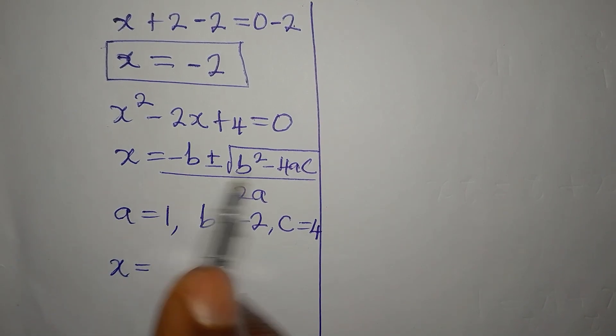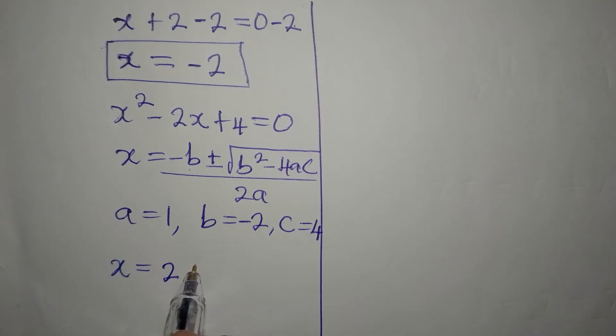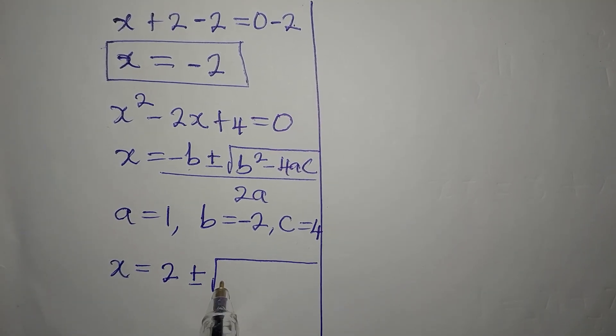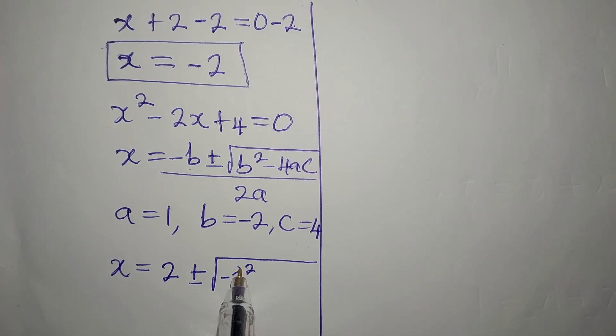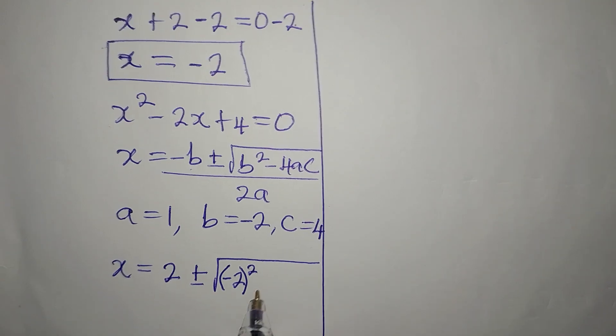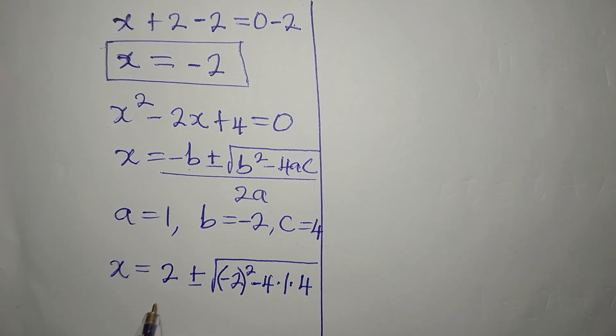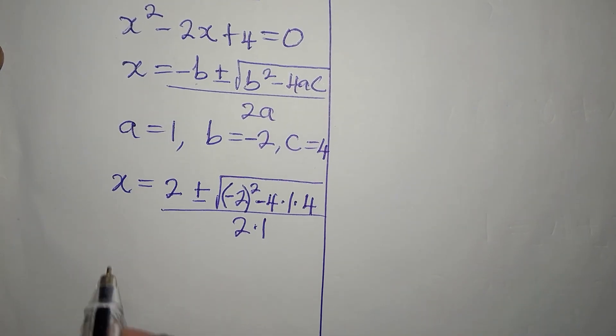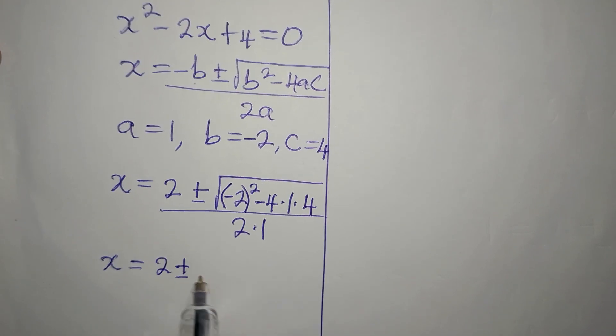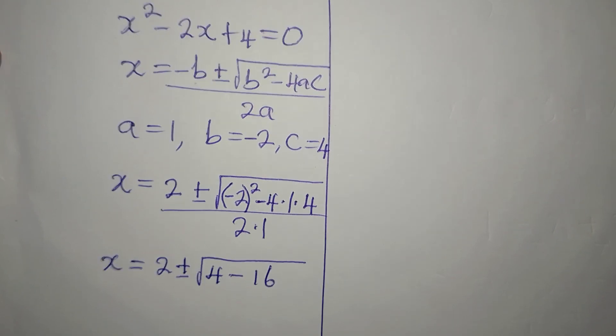x will now be, this minus 2 will be, minus b will become 2. Because negative, negative will turn to positive. Then plus or minus square root of negative 2 squared. If I write like this, this will not be correct, because we have to put this in brackets. Then minus 4 times 1 times 4. Then we divide by 2 times 1, and that will still be 2. So x from here now is going to be 2 plus or minus the square root of 4 minus 16. 4 times 1 times 4 is 16, divided by 2.